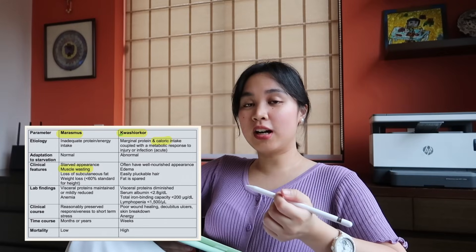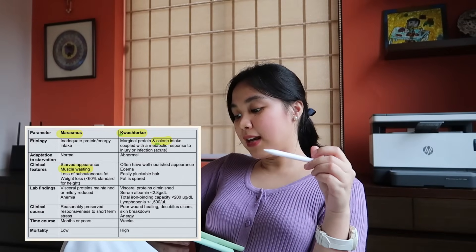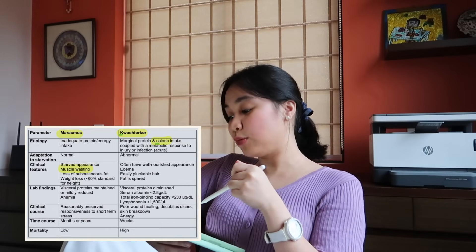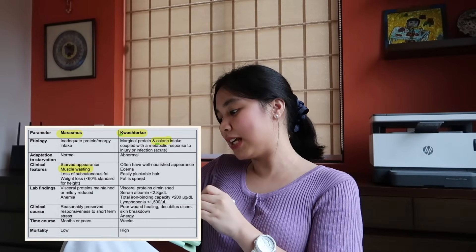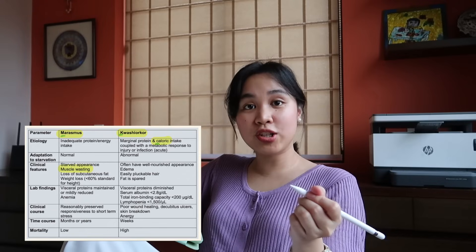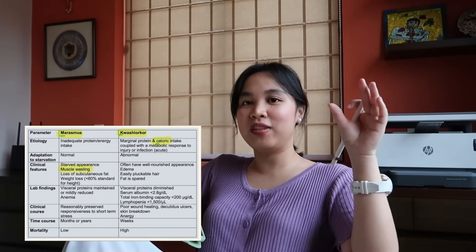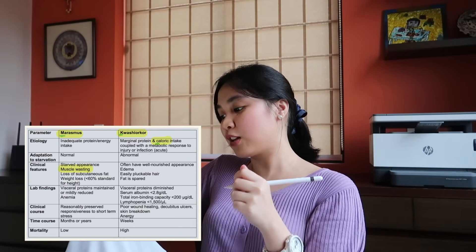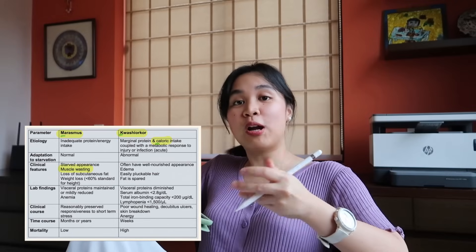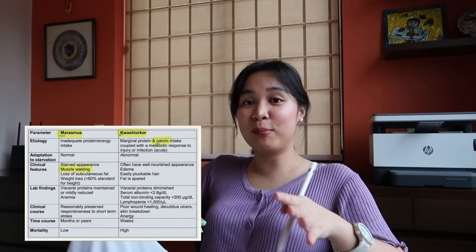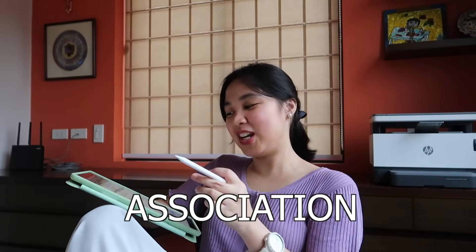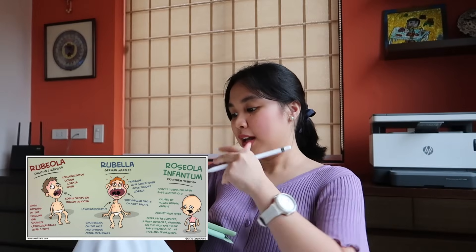Knowing those differences lets you identify which is which, even though both are inflammatory bowel diseases. Another example is marasmus versus kwashiorkor — one involves inadequate protein intake and the other inadequate caloric intake. To remember it, I associate the letter K with caloric, so kwashiorkor equals caloric — K and C sound similar. For marasmus, the clinical feature of muscle wasting: if you invert the letter M, you get a W for wasting.